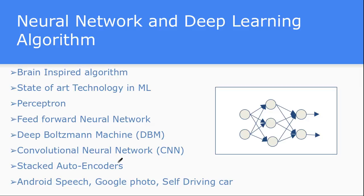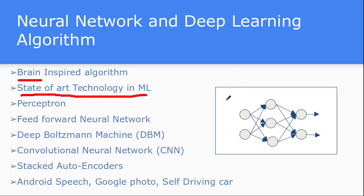Neural networks are very famous in the current state of the art technology in artificial intelligence and machine learning. This family of algorithms is inspired by the brain — how the brain works. It is completely inspired by how the brain generally operates, and is one of the state of the art technologies inside machine learning. This is one of the supervised ways of learning algorithms.